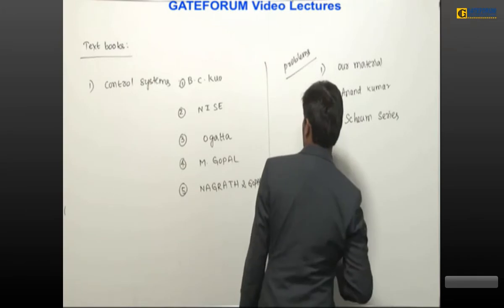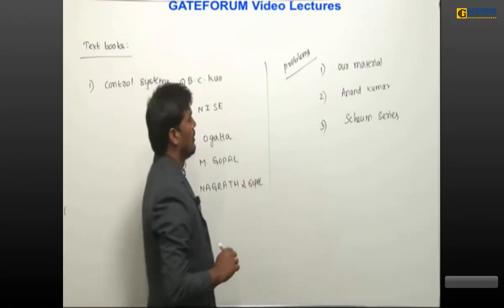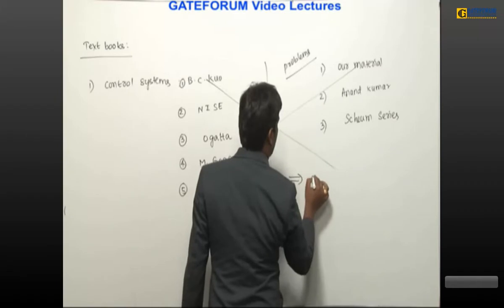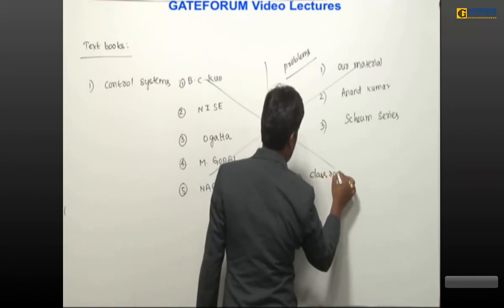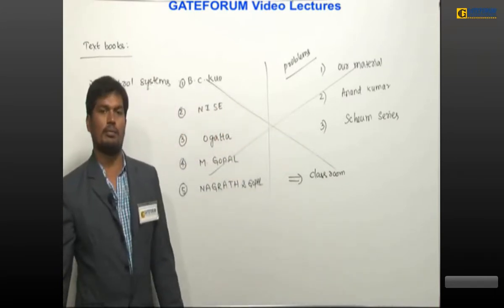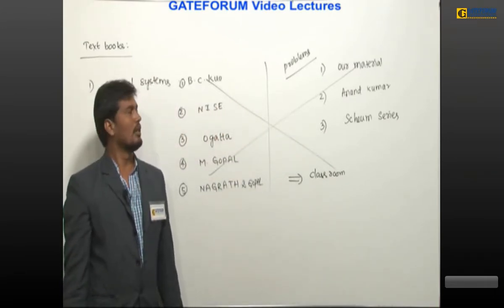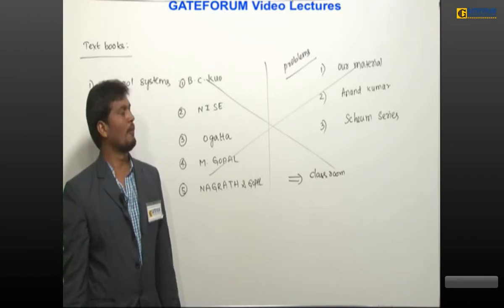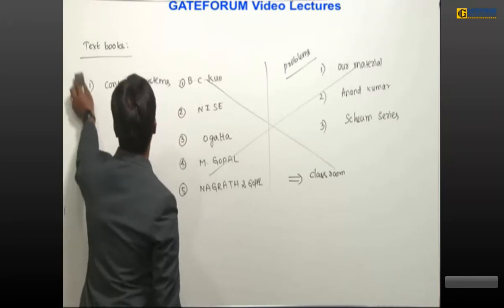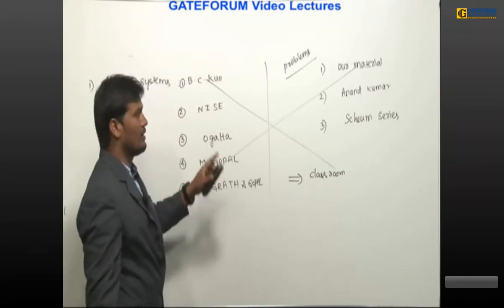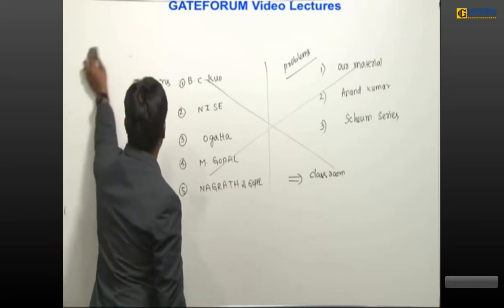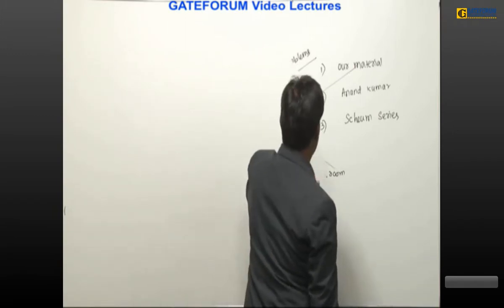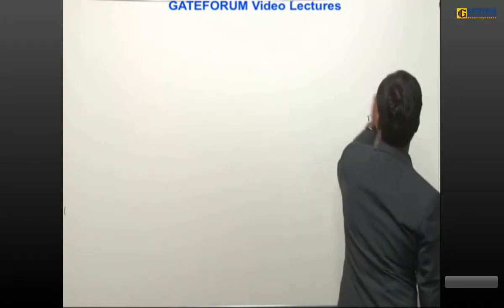These are three books for problems and five books for theory. Finally, all these are not strictly required — please listen carefully to my class. Our classroom lectures include solving many problems with shortcuts. Definitely it will be helpful and you cannot find all these things in any textbook — it is only based on my experience. I have given references if you require textbooks, but for GATE and IAS standard only our classroom lectures and shortcuts are enough.